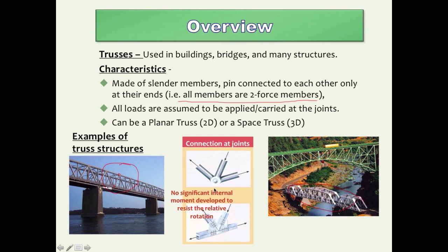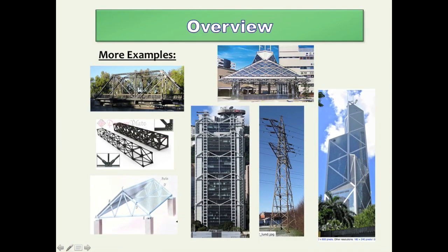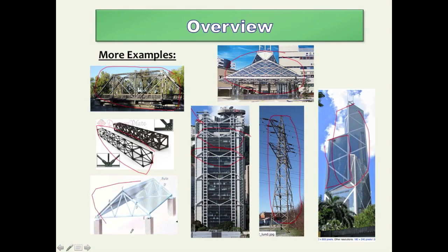That's why we assume they are pin connections. Let me show you a few more examples of typical trusses. For instance, this is a space truss — a building where all the external skeleton is made of truss structures. This is a power transmission structure made of spatial or 3D trusses. This is a roof structure made of a truss. This is a pedestrian bridge made of a simple truss. And here are 3D trusses used for transmission towers or other applications.